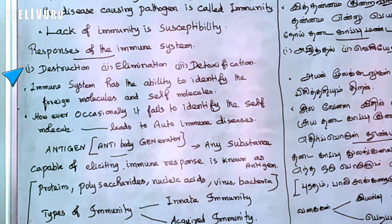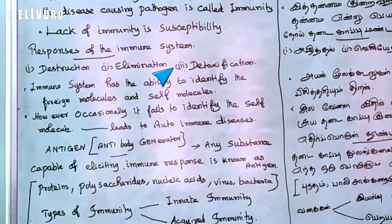The immune response involves three main actions: 1. Destruction, 2. Elimination, and 3. Detoxification of the pathogen or foreign substance.